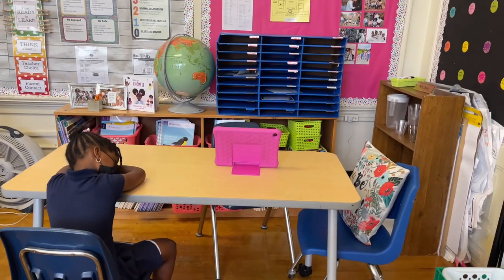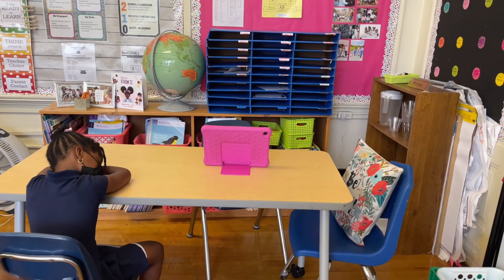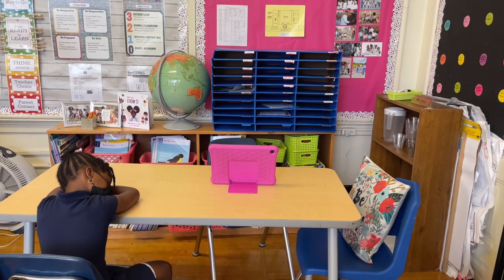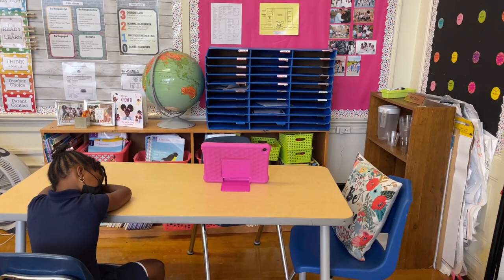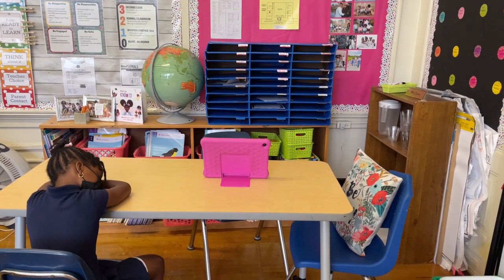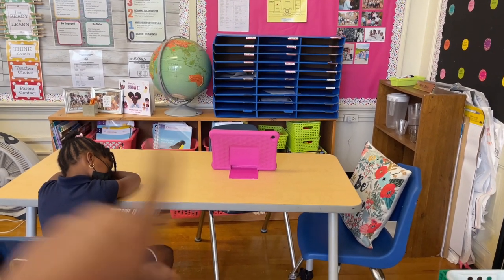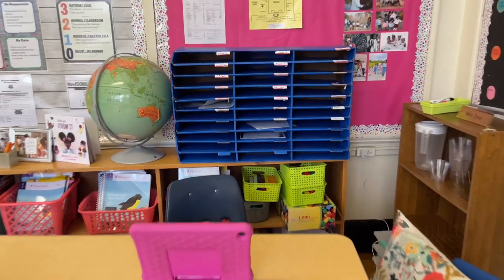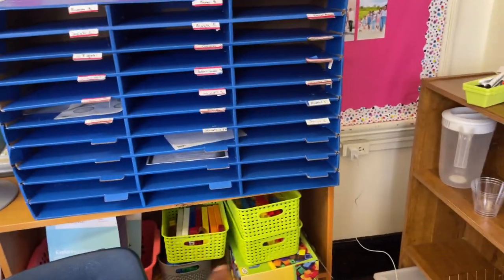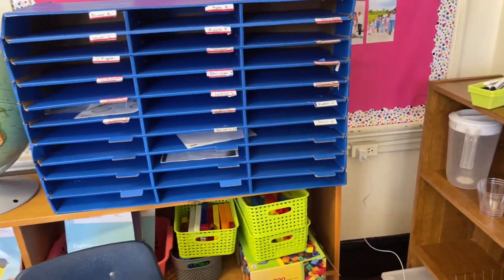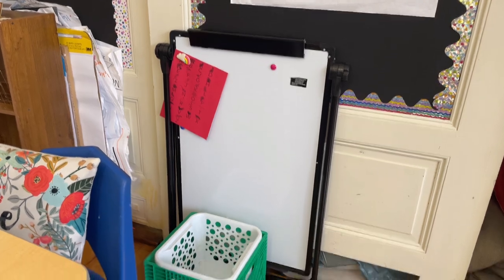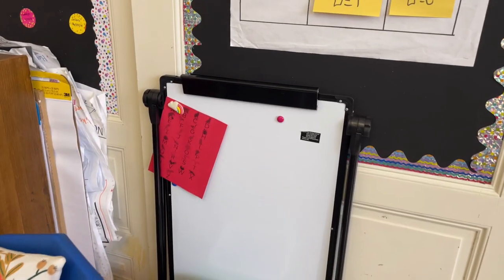Here I just have some containers that can be used in this group. This is our small group area — if I have somebody that comes in to do interventions with my students, they'll be right here. I already have a bin with blocks and things that they might need for that group. They also will have a dry erase board here that they can utilize.